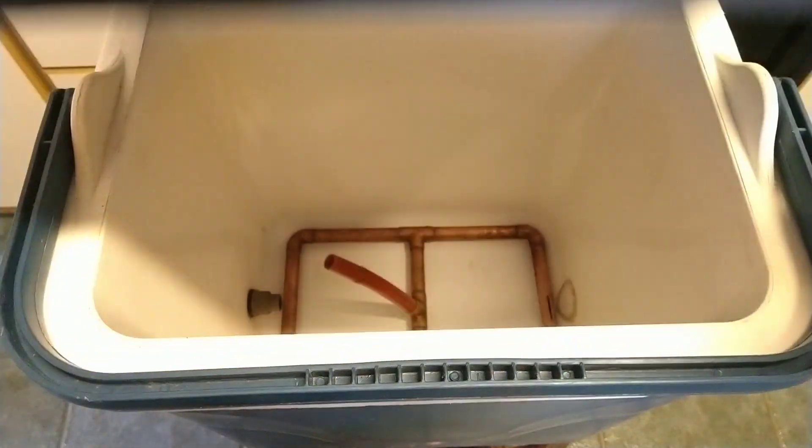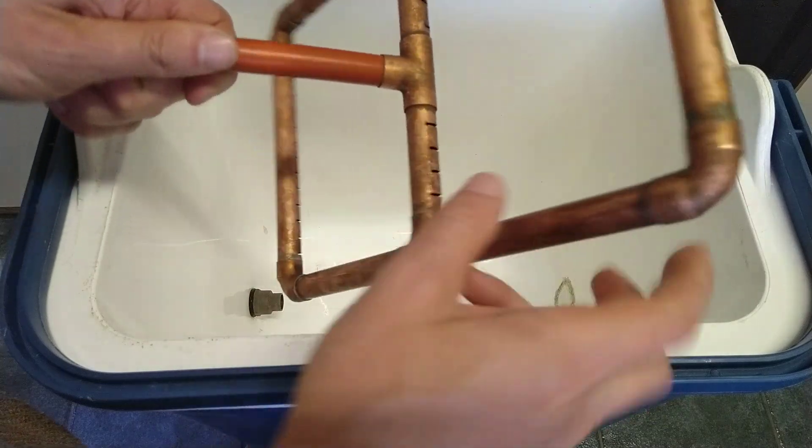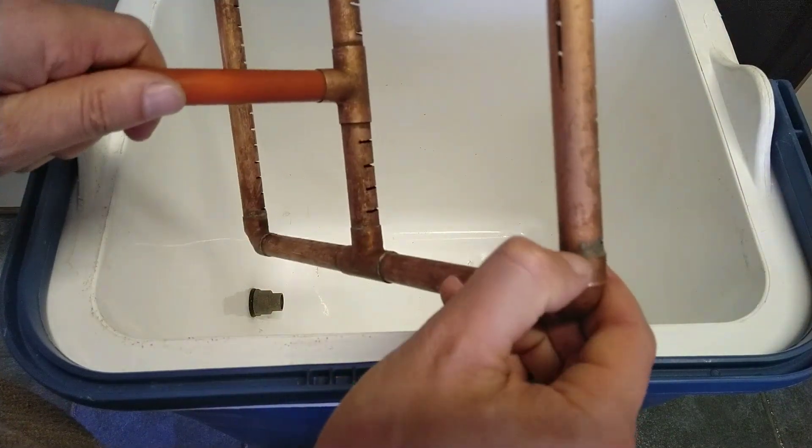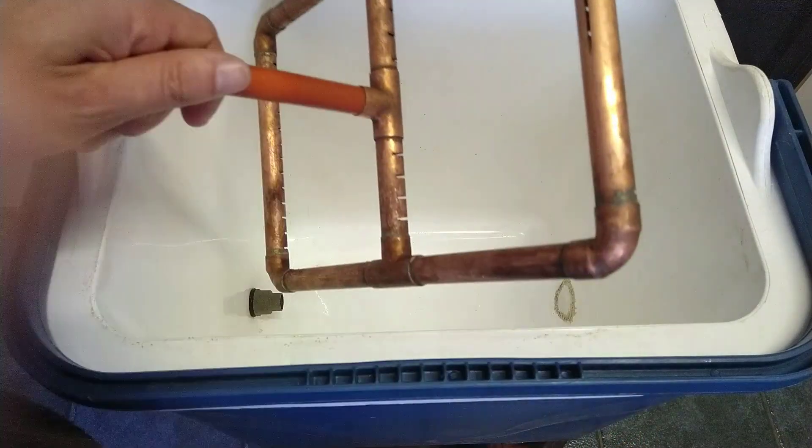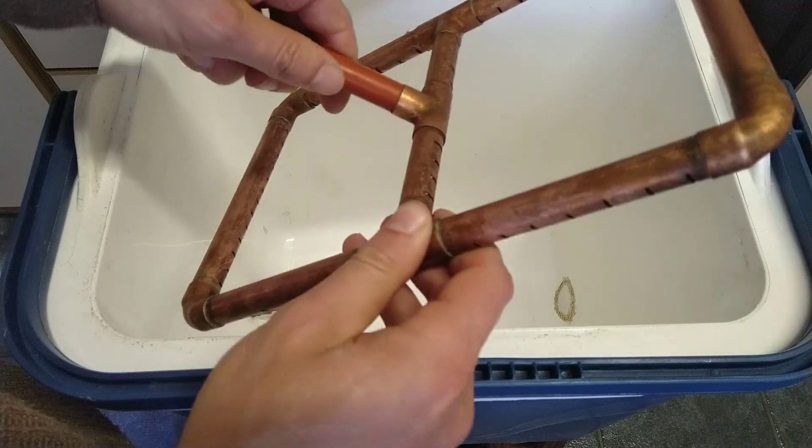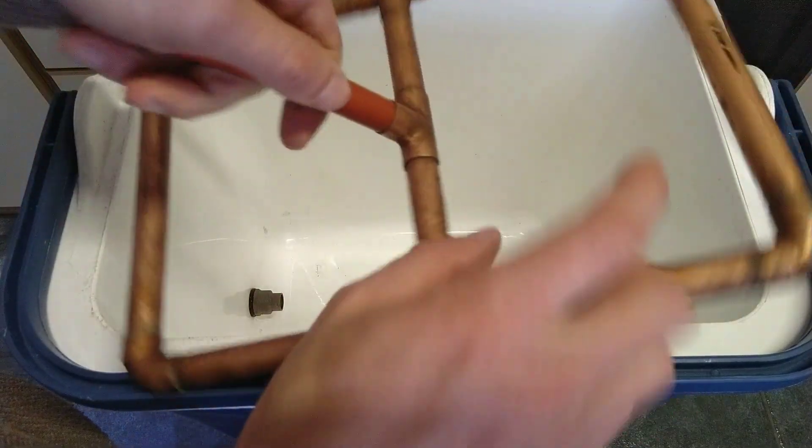Okay, so this is the mash tun. It's a cooler box with a bit of copper pipe soldered together with lead-free plumbing solder. I've cut some slits in the bottom, and there's air holes at the top.